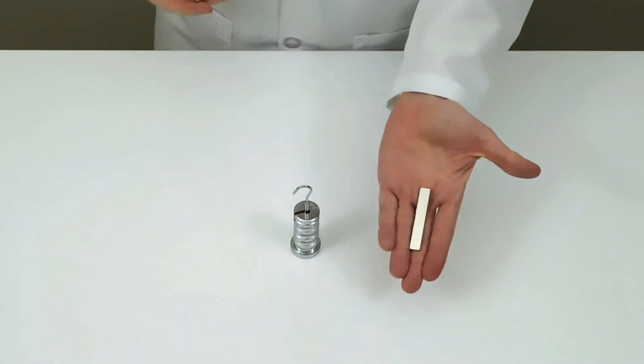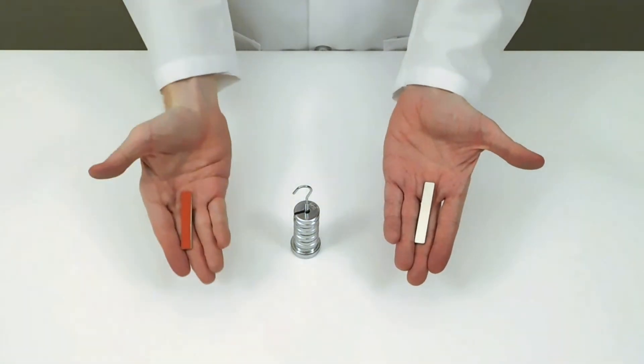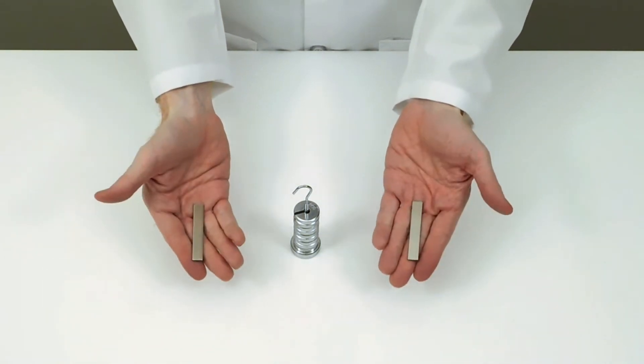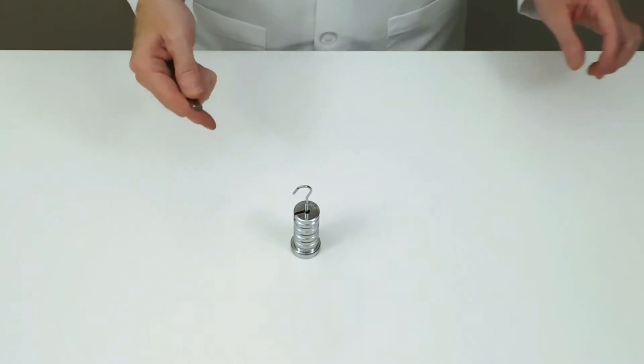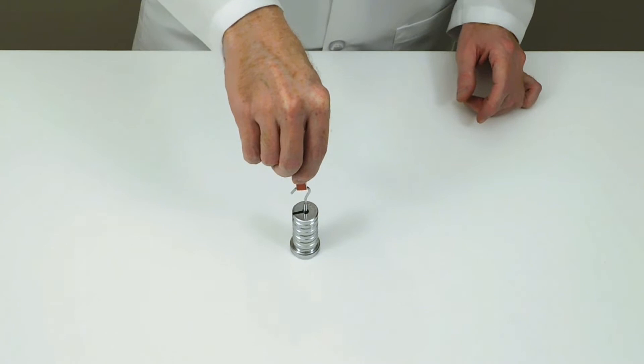This bar-shaped magnet is the same one we used in our earlier experiment. This one is identical, but we put red tape on its north pole. This magnet's magnetic force is too weak to lift this stack of weights.